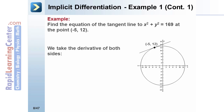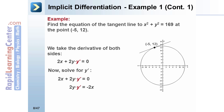It is now time to take the derivative of both sides: 2x plus 2y times y prime equals zero. Now we solve for y prime. We move the 2x to the other side, where it becomes negative 2x, then divide both sides by 2y. This makes the derivative equal to negative x divided by y. Substituting negative 5 for x and 12 for y, the slope of the tangent line is 5 twelfths.